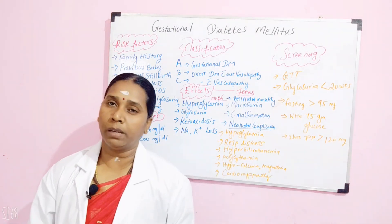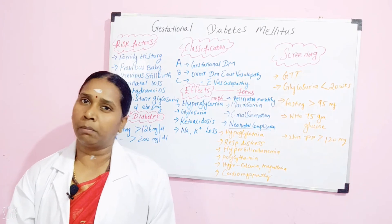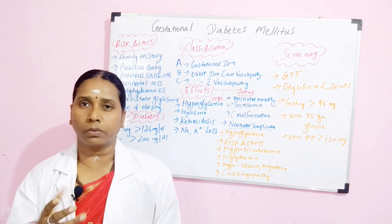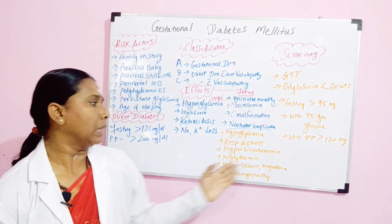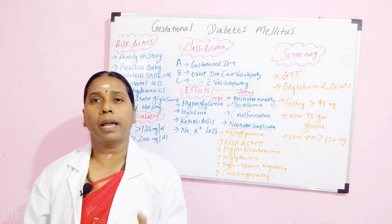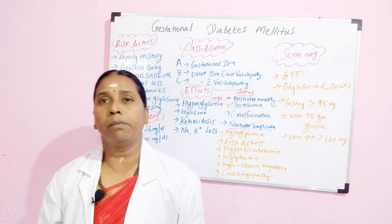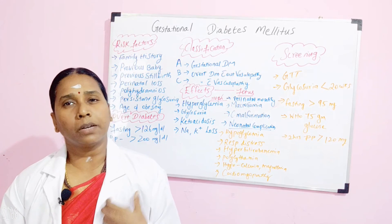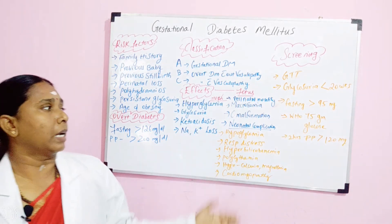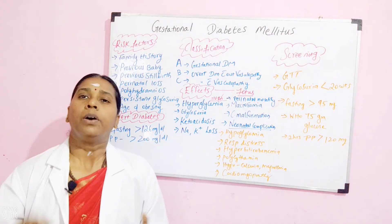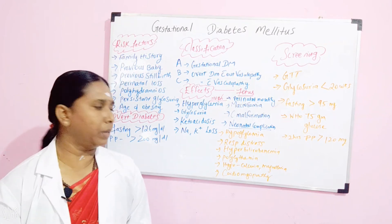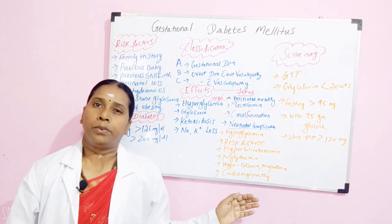Other neonatal complications include hyperbilirubinemia — due to liver dysfunction, there is increased bilirubin level in the blood. Polycythemia may be present because of increased cell destruction. Hypocalcemia and hypomagnesemia will also be present, and cardiomyopathy — when the heart cells are functioning to the extreme, there may be cardiomyopathy for the baby. So the neonatal complications are: hypoglycemia, respiratory distress, hyperbilirubinemia, polycythemia, hypomagnesemia, hypocalcemia, and cardiomyopathy.